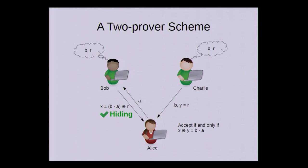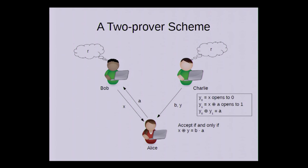Okay, we saw that this scheme is hiding. Let's see why it's binding. Suppose now we have dishonest provers, still with shared randomness, but they can't communicate. And if Charlie wants to open the commitment to zero, then what he has to do is send the same message as Bob. If he wants to open to one, then he has to send the message from Bob, XORed with A.